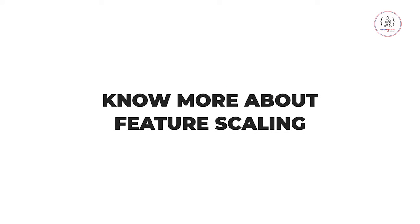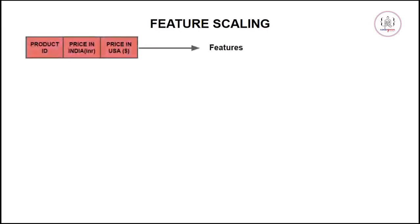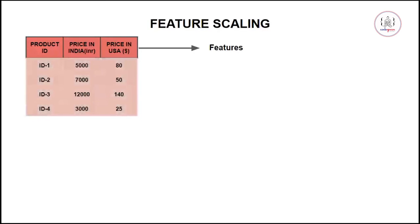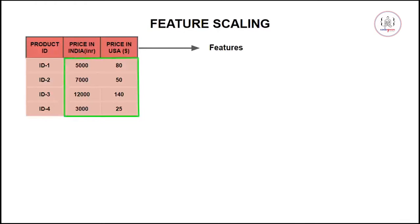In this video we are going to talk about feature scaling. In your dataset, you have rows as well as columns. Your columns are also known as features or attributes, and your rows are known as data points or instances. Here you have features like product ID, price in India (in INR), and price in USA (in dollars). We do feature scaling only for numeric values.